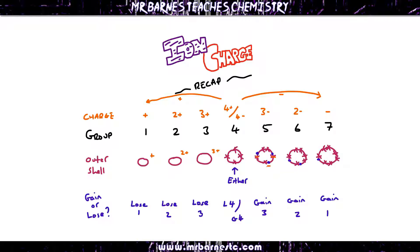You can look at any element. For example, magnesium, which is in group 2, therefore it's always going to be 2+. If you had sulfur, it's in group 6, it's always going to be 2-, and so on.